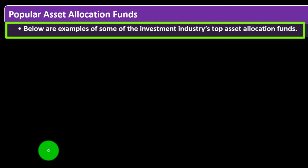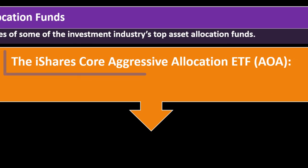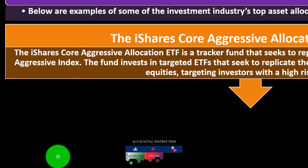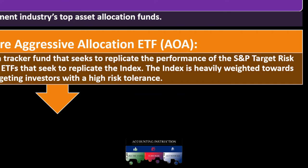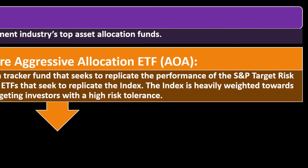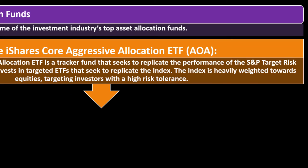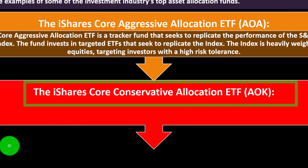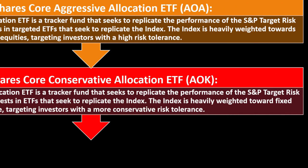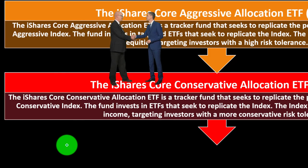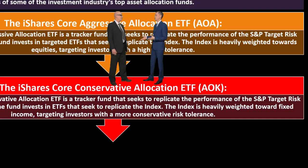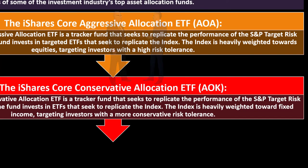Here are examples of the investment industry's top asset allocation funds. The iShares Core Aggressive Allocation ETF (AOA) is a tracker fund that seeks to replicate the performance of the S&P Target Risk Aggressive Index, investing in targeted ETFs tied to that index, which is heavily weighted towards equities — targeting investors with a high risk tolerance. The iShares Core Conservative Allocation ETF (AOKG) is a tracker fund tied to the S&P Target Risk Conservative Index, heavily weighted towards fixed income, targeting investors with a more conservative risk tolerance.